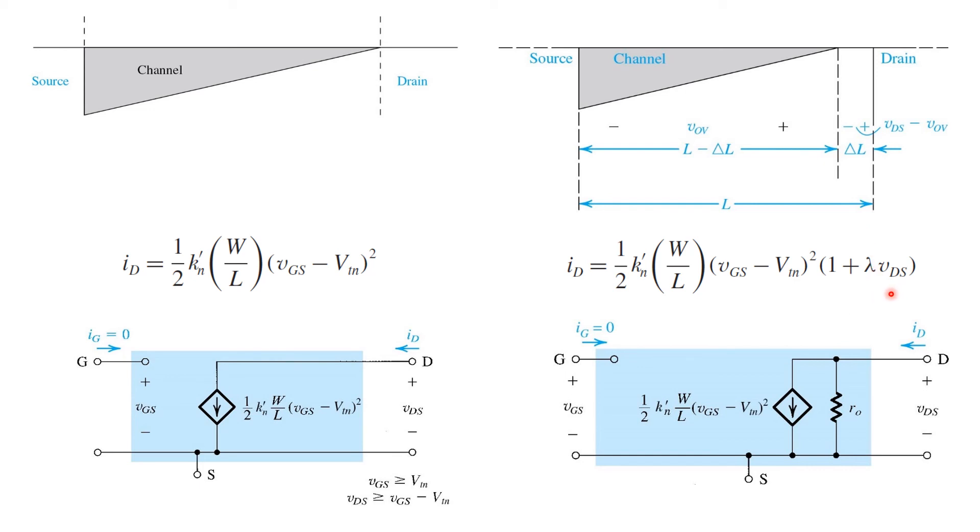In order to capture this in our model, we have to augment the square law voltage-dependent current source here with the drain source resistance, RO, in saturation. Again, this captures the extra current that's added on top of the square law current due to increasing VDS beyond the overdrive voltage.